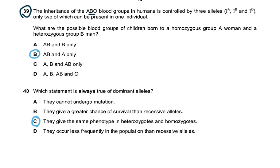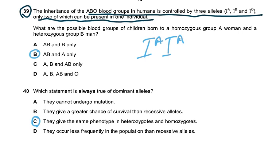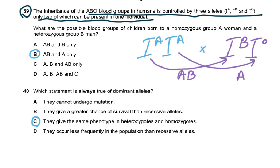Question 39. The inheritance of ABO blood groups in humans is controlled by three alleles, only two of which can be present in one individual. What are the possible blood groups of children born to a homozygous group A, that means IAIA, group A woman and a heterozygous group B man, IBIO? The children are going to be either AB or group A because AO is recessive, so AO is A actually. That is why the answer was this.